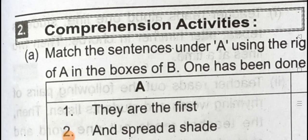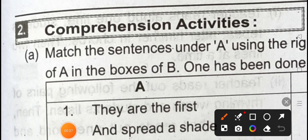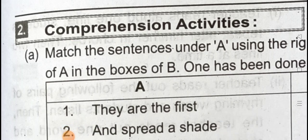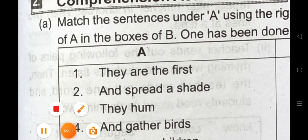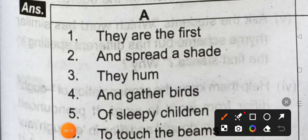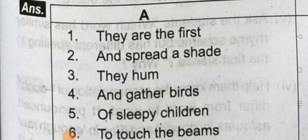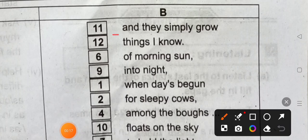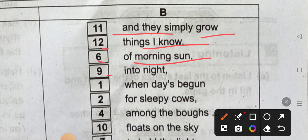In English book chapter, the country, section 2 completion activities. This sentence is written in English and they simply grow. 12 things I know, 6 of morning sun, 9 into night, 1 when days begin, 2 for sleepy cow, 4.